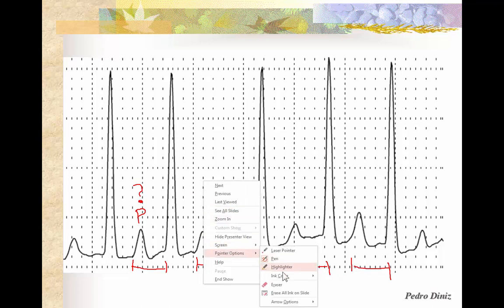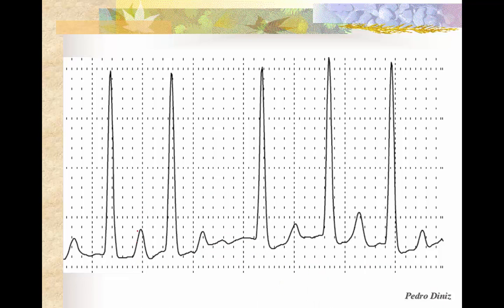On the other hand, if these are T waves, then the QT interval will be this distance right here. The next one will be somewhere here, and the next one somewhere here. As you can see in this example, the QT interval is much more constant than if these were P waves.